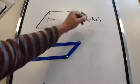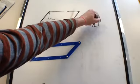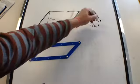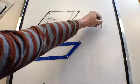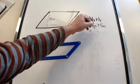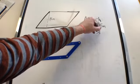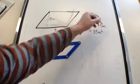In this case, we have a base of 7 meters times the height of 5 meters. When you multiply those together, you will get 35 meters squared.